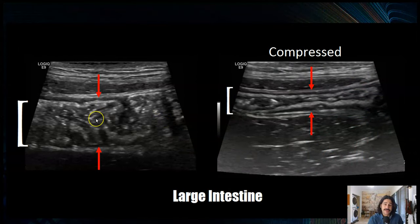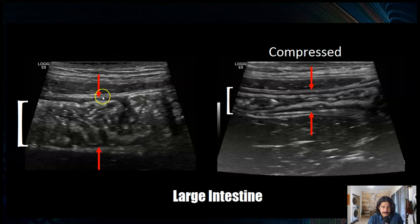Bowel that's not filled with dense feces is compressible. That's important for the small intestine, large intestine, and especially the appendix. If you can't compress it, it's because it's distended with feces and/or fluid. You can see here a picture of large bowel — you see the haustra, you see the submucosa — and then that's it compressed. A little pressure and you can see it compress.